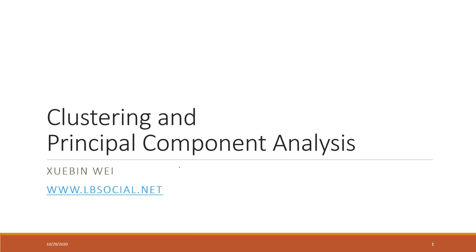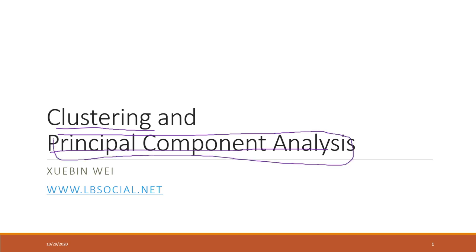This week we will cover another type of machine learning model — unsupervised machine learning. Specifically, we will talk about clustering and also PCA, principal component analysis. PCA was mentioned earlier this semester and can be used to reduce the number of features while maintaining the explanatory power of our dataset, effectively reducing dimensions.